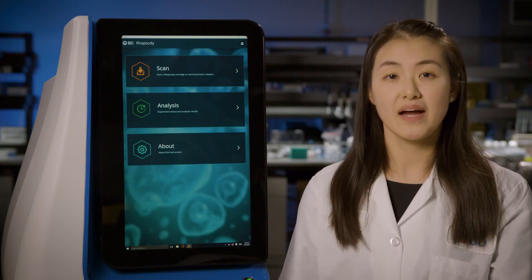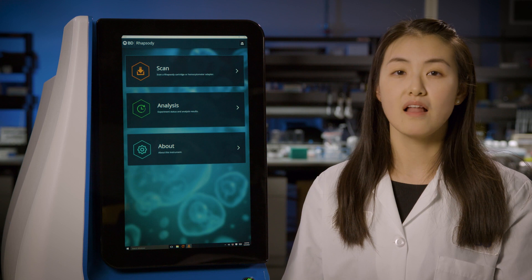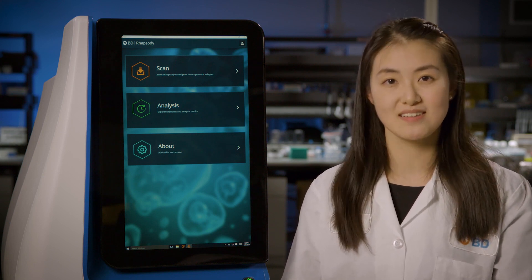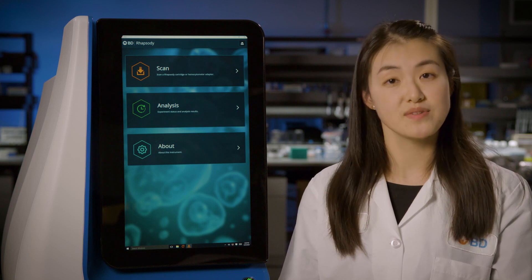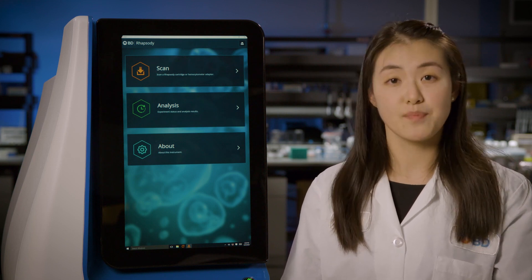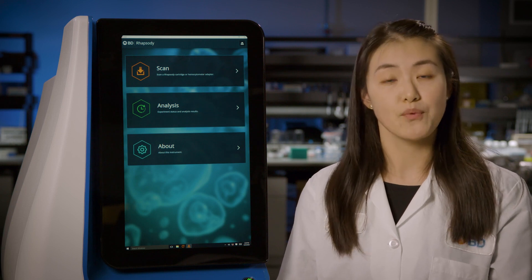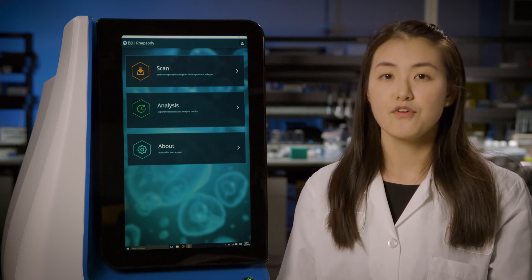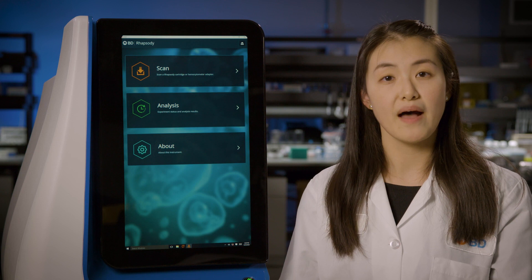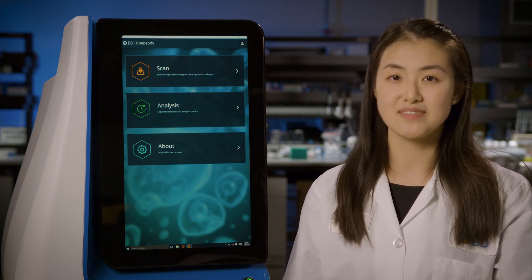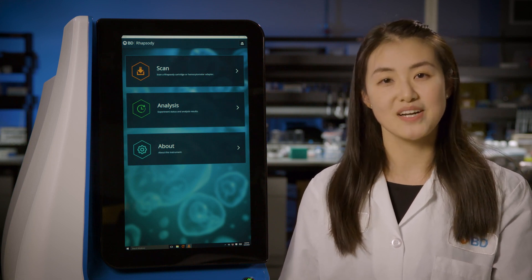The metrics reported by the BD-Rhapsody scanner allow you to make informed decisions during your single-cell experiments. They can help you save on sequencing costs by aborting experiments when cell capture rates are low or multiplet rates are high. If you're interested in learning more about the BD-Rhapsody single-cell analysis system, contact your local sales representative. Thank you for watching!